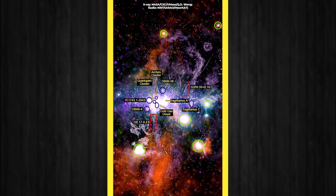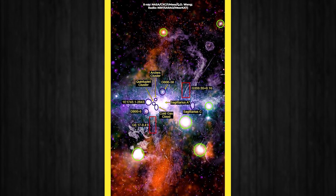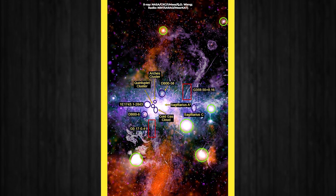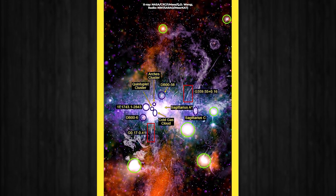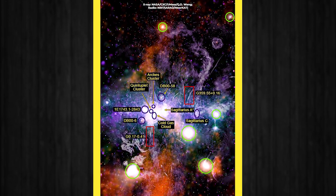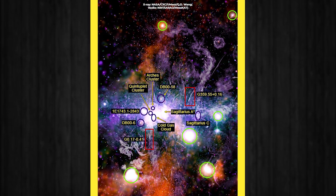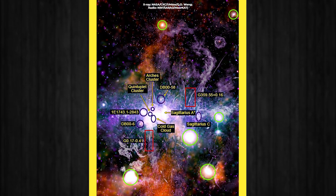In the labeled version of the image by the Chandra team, you can pinpoint different notable features of the galactic center, including Sagittarius A-star, the supermassive black hole at the Milky Way's heart.